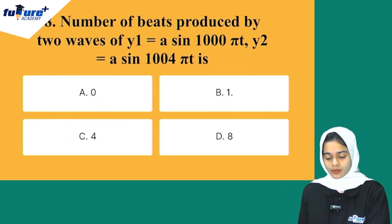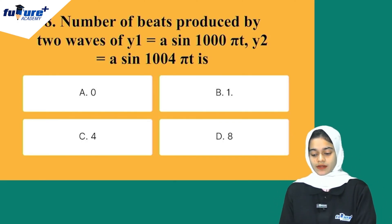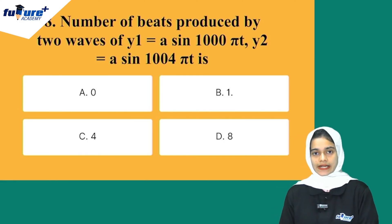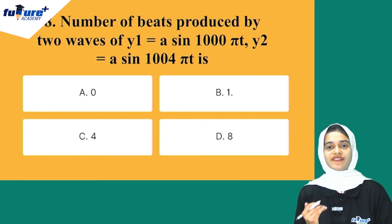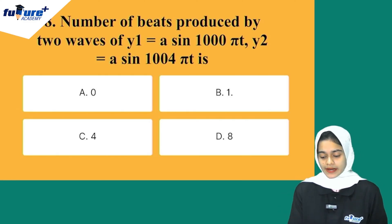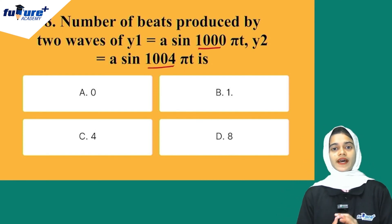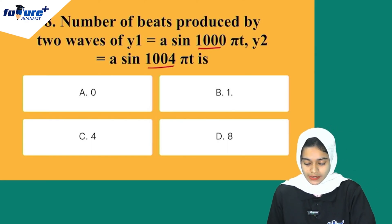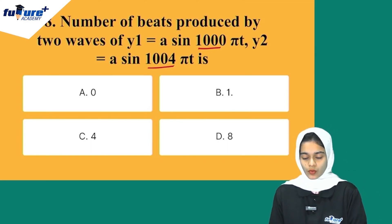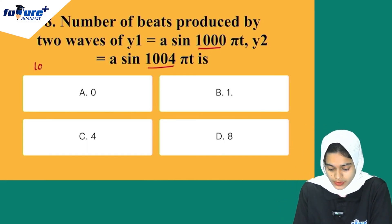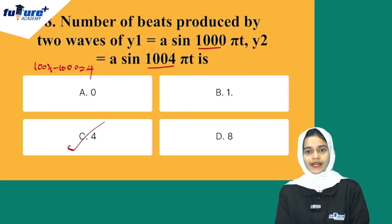The number of beats produced by two waves: Y1 = A sin(1000πt) and Y2 = A sin(1004πt). Beats per second equal the difference in frequencies. The first wave frequency is 1000 and the second is 1004. So beats = 1004 − 1000 = 4. Option C is the correct answer.